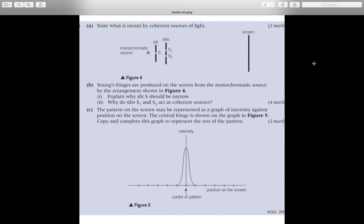Question B: Explain why slit S should be narrow. Question B: Why do slits S1 and S2 act as coherent sources?